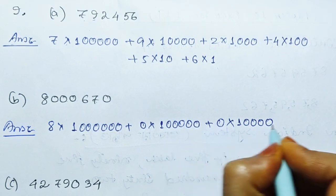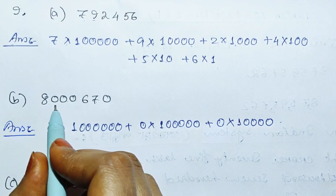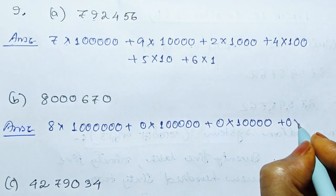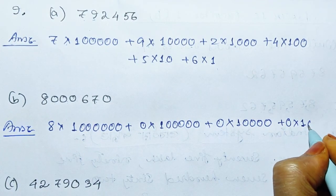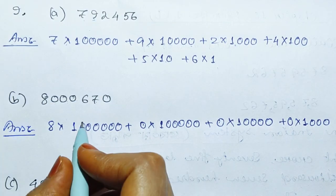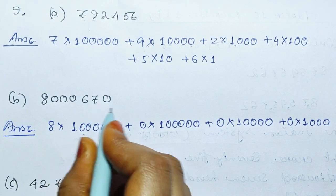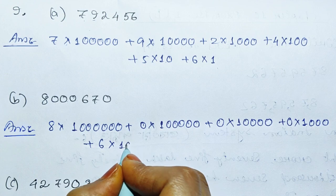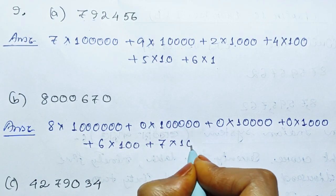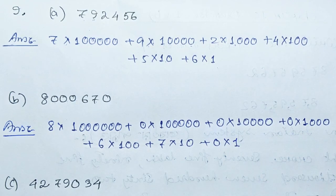We will do this. Plus 0 equals 1,2,3. Plus 6 equals 100. Plus 7 equals 10. Plus 0 equals 1.